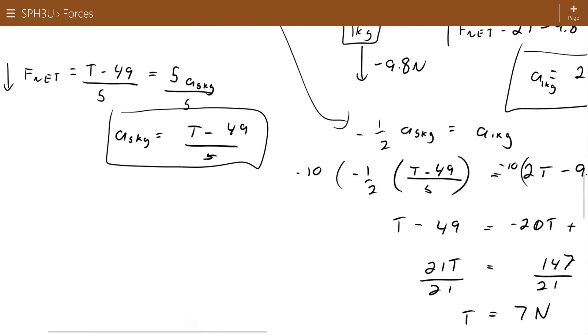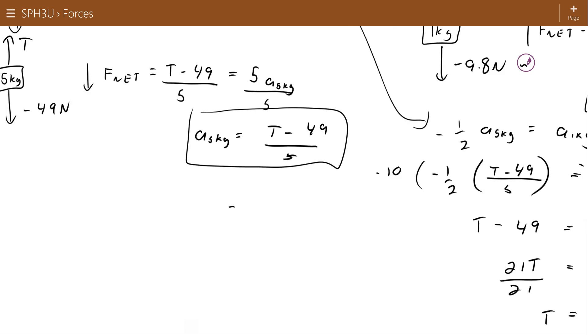Now, what I'm going to do over here is I'll substitute that same 7 in, 7 minus 49, divided by 5. And I'll get 7 minus 49 divided by 5, negative 8.4 meters per second squared.